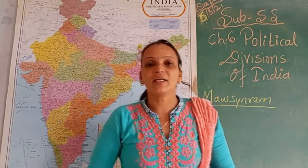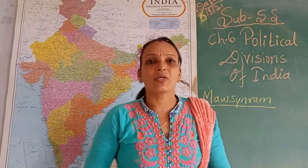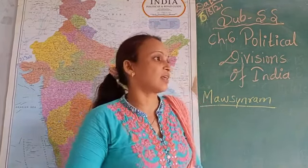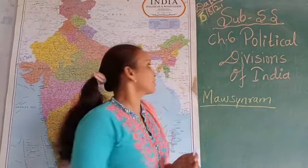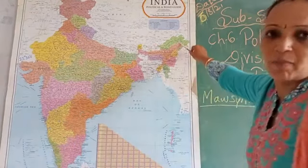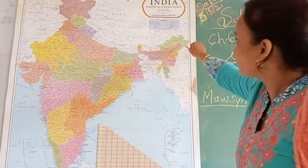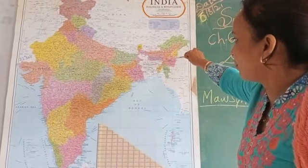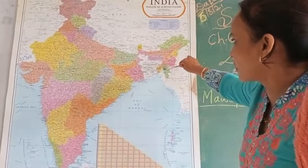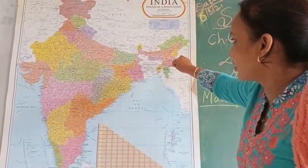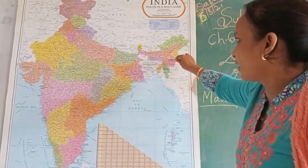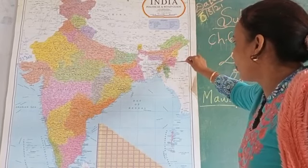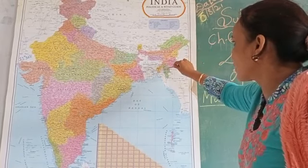Today we learned about our Seven Sisters. The seven sisters are: Arunachal Pradesh, Assam, Nagaland, Manipur, Mizoram, Tripura, and Meghalaya. That is one, two, three, four, five, six, seven.